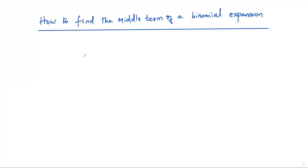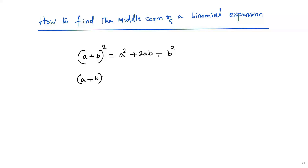Let us consider two algebraic identities. The first one is (a + b) whole square, and its expansion is a squared plus 2ab plus b squared. The second identity is (a + b) whole cube, which expands to a cubed plus 3a squared b plus 3ab squared plus b cubed.